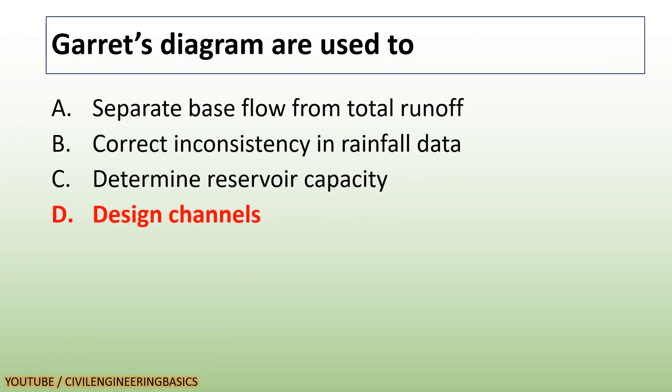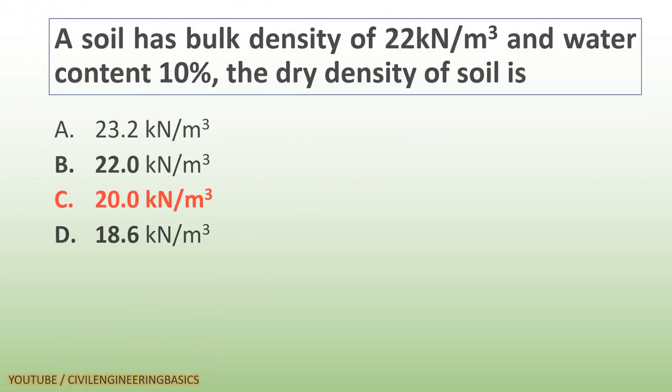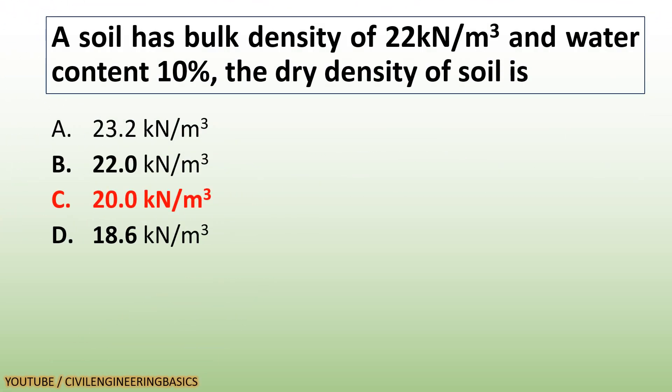Kennedy's diagram is used to design channels. A soil has a bulk density of 22 kN per cubic metre and water content 10%; then the dry density of soil is 20.0 kN per cubic metre.